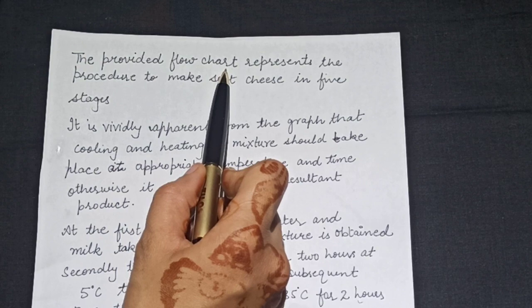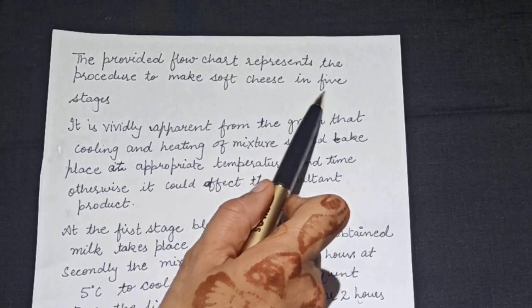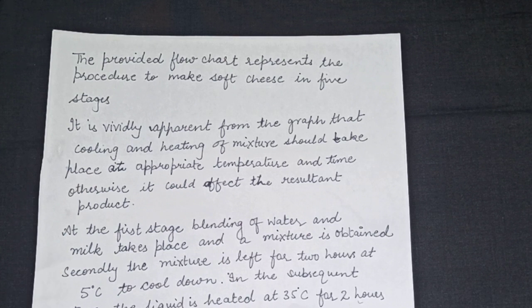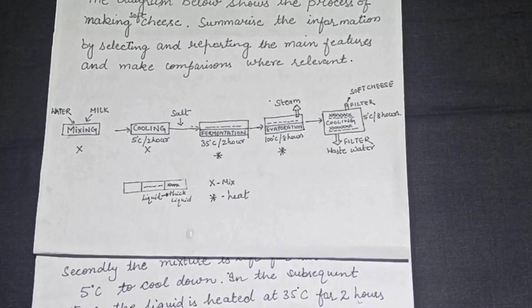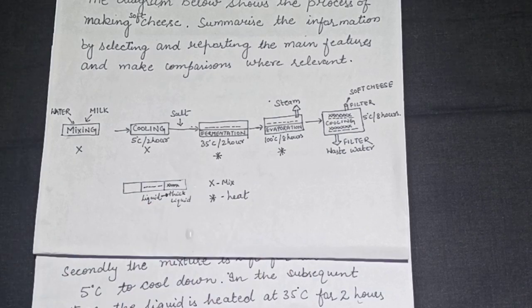The provided flowchart represents the procedure to make soft cheese in five stages. You can see there are five stages one, two, three, four and last one is fifth.